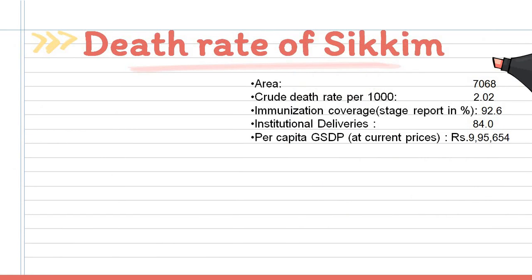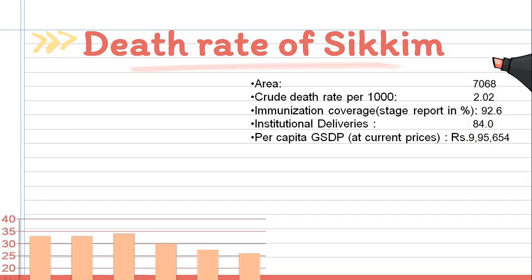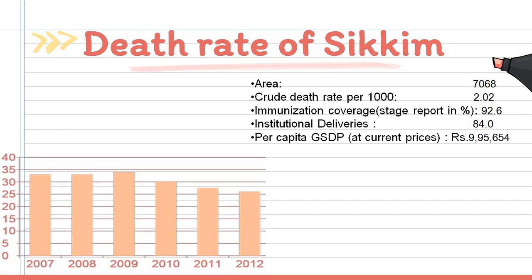Death rate of Sikkim: this statistic is also based on the year 2013, with a death rate of 2.02. Here is a graph showing the death rate of Sikkim from the year 2007 to 2012.